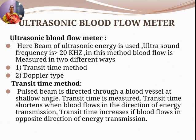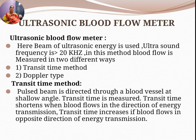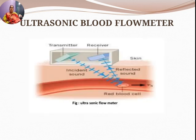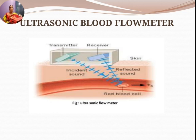In the transit time method, a pulsed beam is directed through a blood vessel at a shallow angle and the transit time is measured. Transit time shortens when blood flows in the direction of energy transmission, and increases when blood flows in the opposite direction. So from the diagram, sound produced by the transmitter passes through the blood vessel and is reflected back to the receiver.